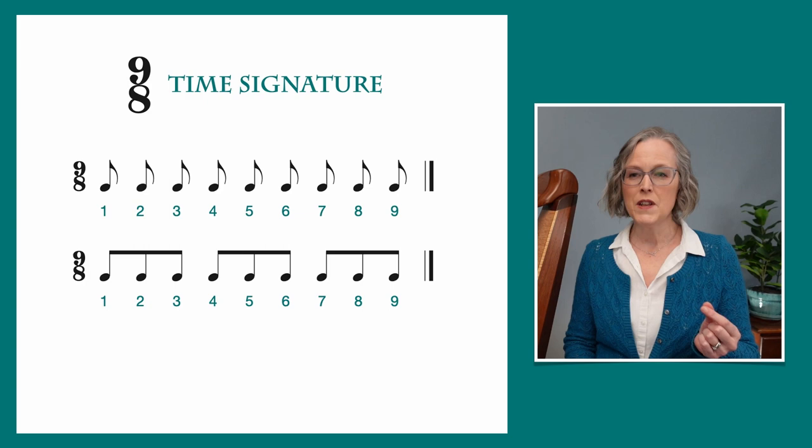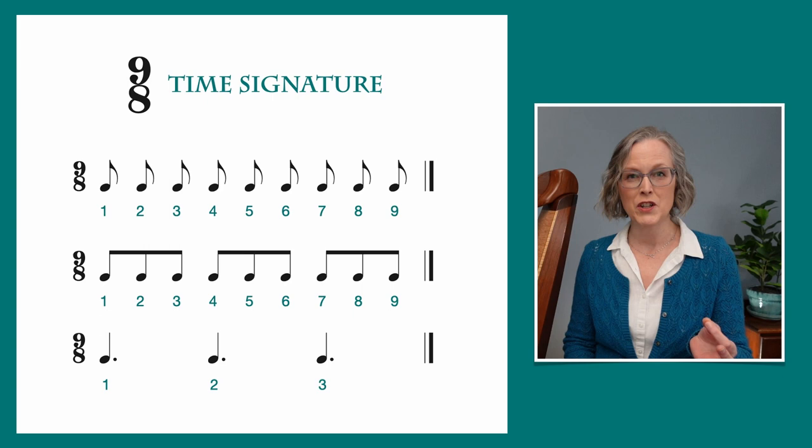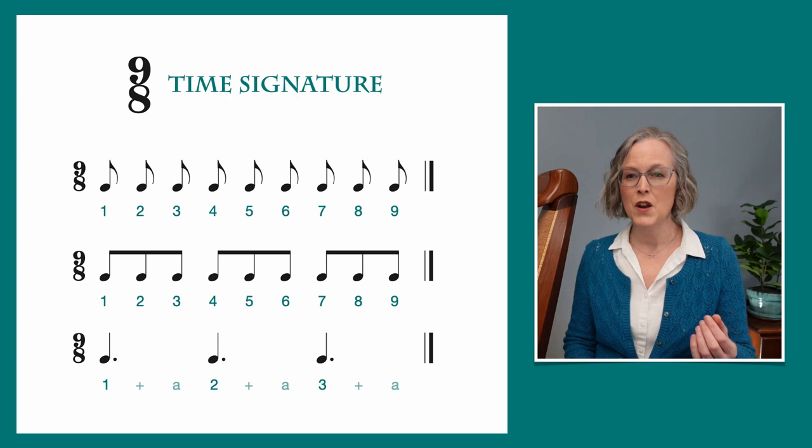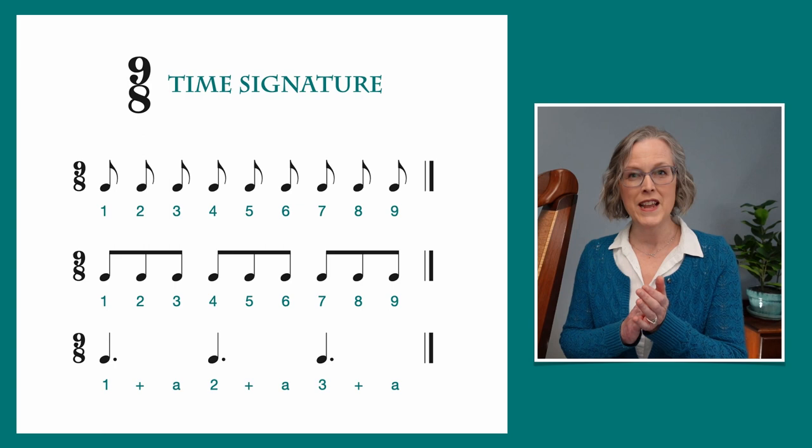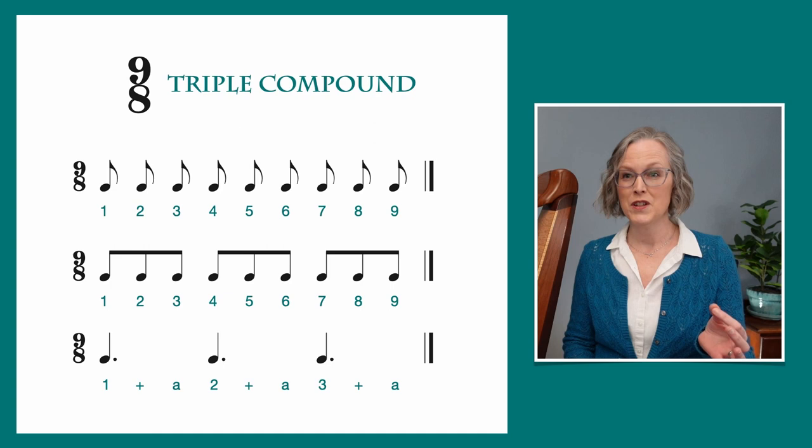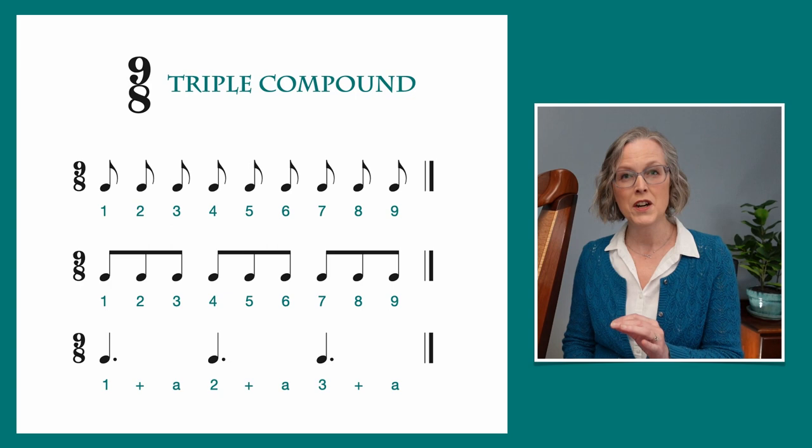Each of these groups of threes can be subdivided down into a dotted quarter note pulse, so we can see that there are three basic pulses in every measure. And this gives us a new way of counting, which is going to be a little bit easier. We could count 1 and a, 2 and a, 3 and a. That's much easier than counting to 9, isn't it? So 9-8 is sometimes called a triple compound time signature. Triple because there are three main pulses in every measure, and compound because those pulses are subdivided into groups of threes.